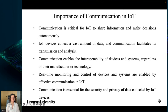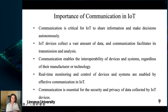Communication is a critical aspect of IoT as it enables different devices and systems to share information, collaborate, and make decisions autonomously. IoT devices collect a vast amount of data from sensors and other sources, and communication facilitates the transmission of this data to the cloud or other devices for processing, storage, and analysis. Effective communication also enables IoT devices to interact with systems such as smart homes, smart cities, and industrial systems.